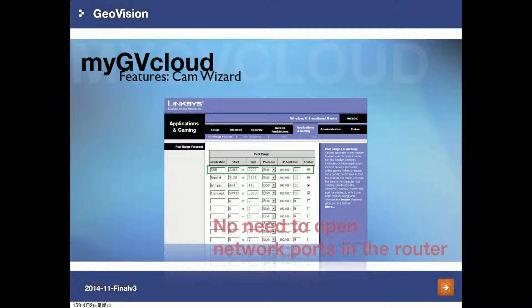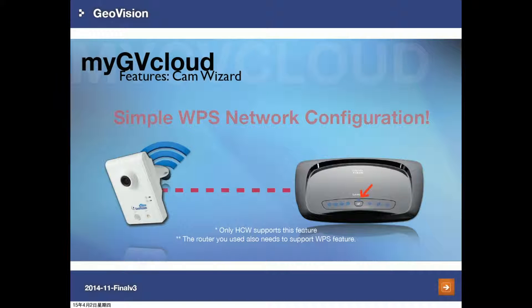Normally, if you want to watch IP cameras via remote live view, it is necessary to open a port in the router. But for JuviCloud cameras, it is not necessary to do so, which is very helpful for those who are not familiar with network settings. This WPS feature is only supported by the cloud camera model HCW. With this feature, you just press the WPS button on both the camera and the router — just make sure the router also supports the WPS feature.